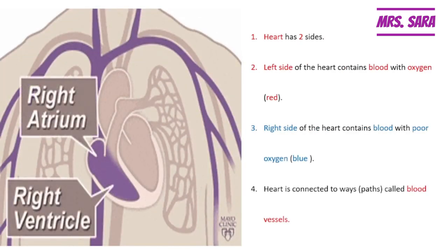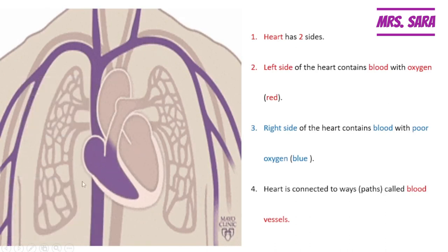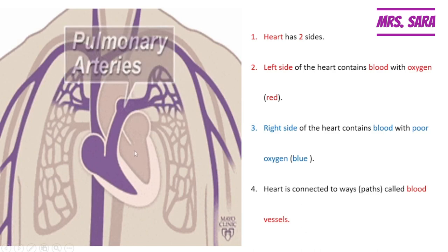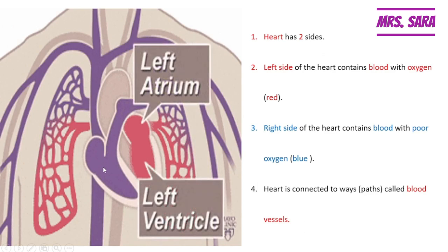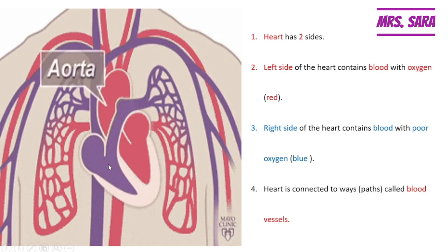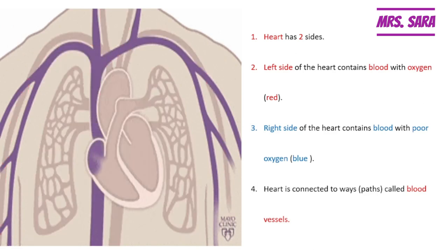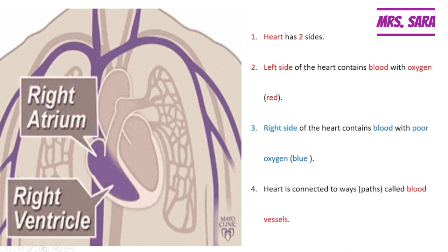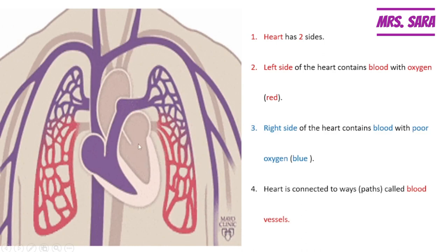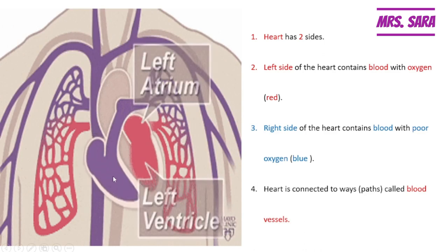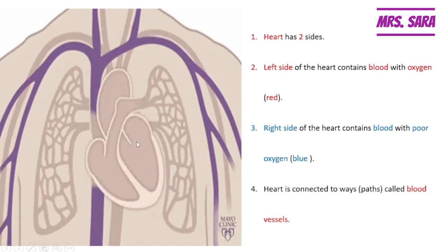The heart has two sides — a blue one and a red one. The red one is the left side and the blue one is the right side. The right side is blue because it contains blood with a low amount of oxygen, or blood rich in carbon dioxide. The left side is red because the blood in the left side contains oxygen.